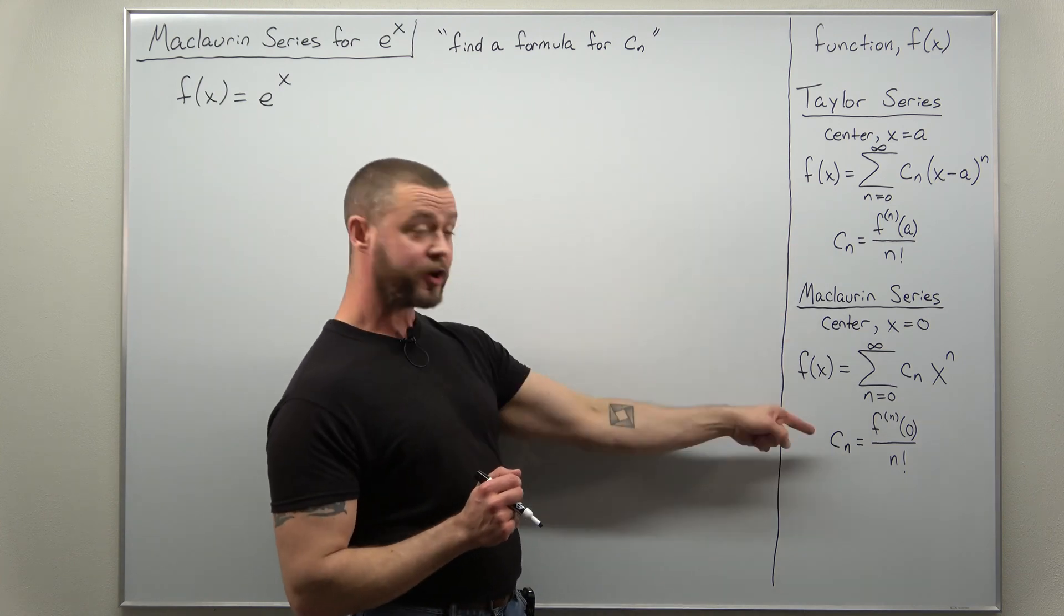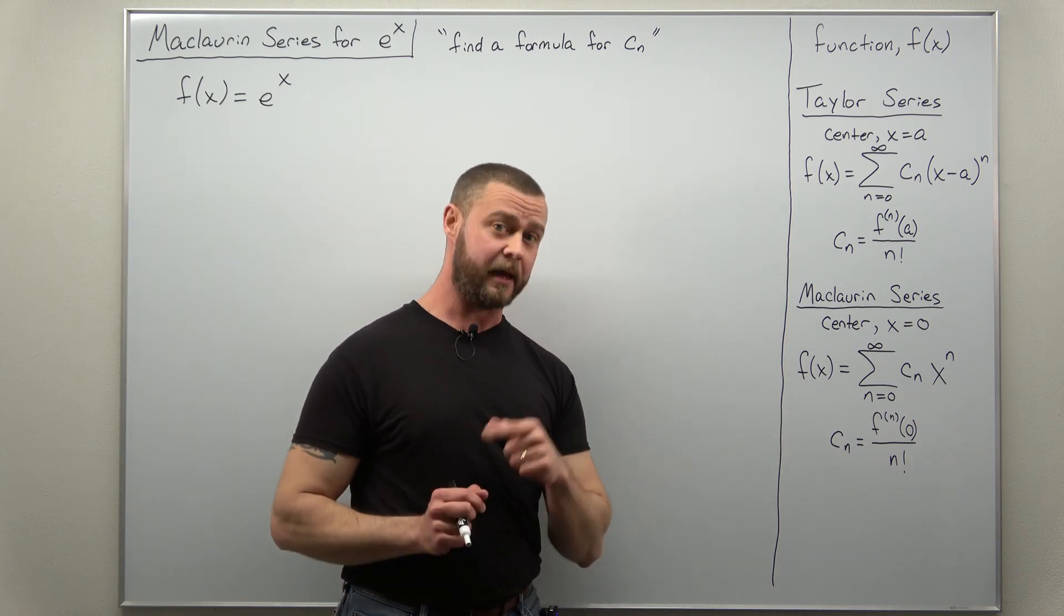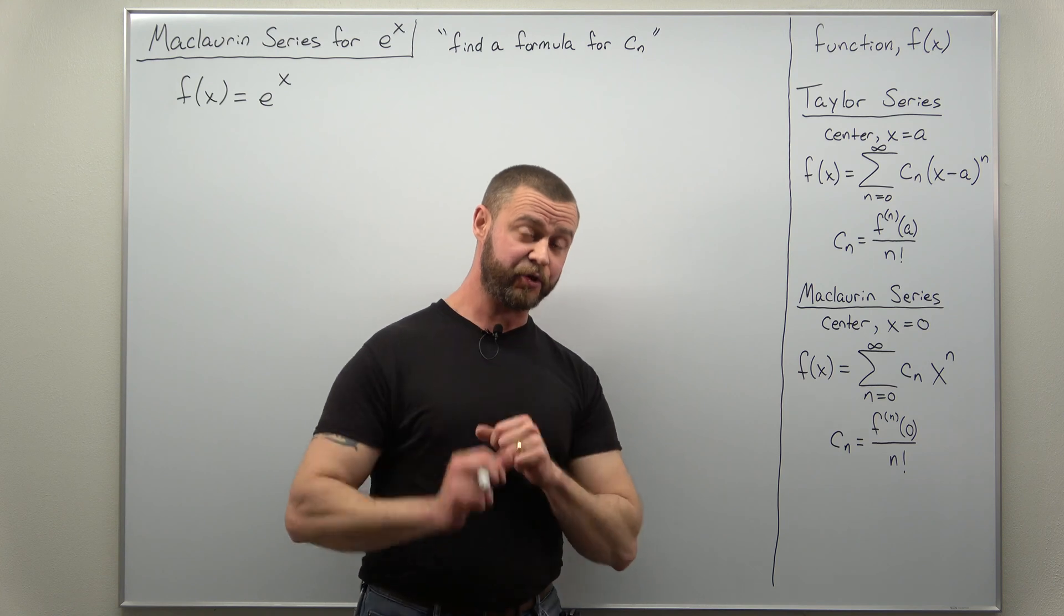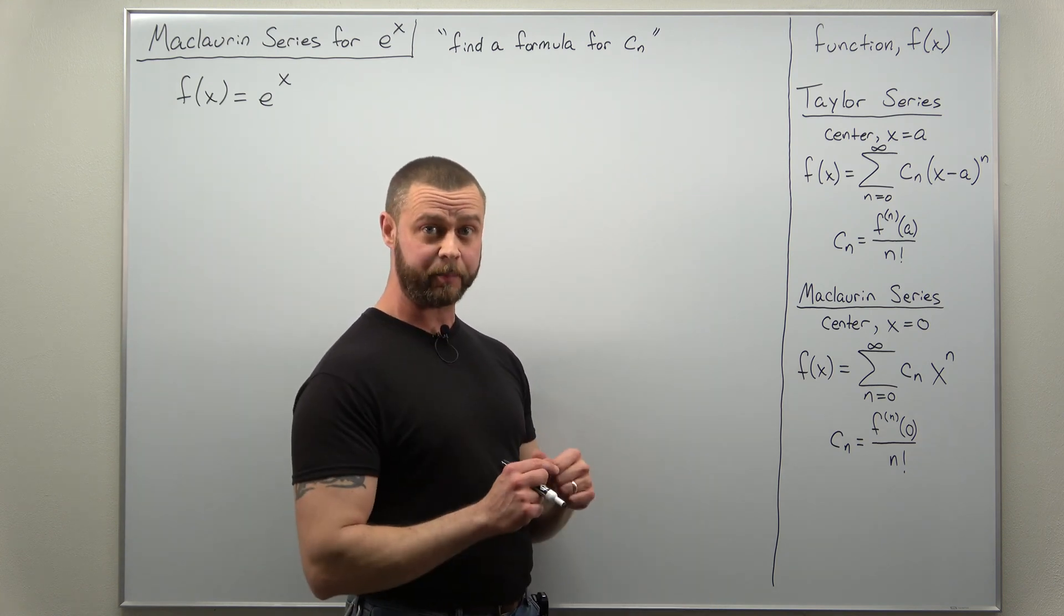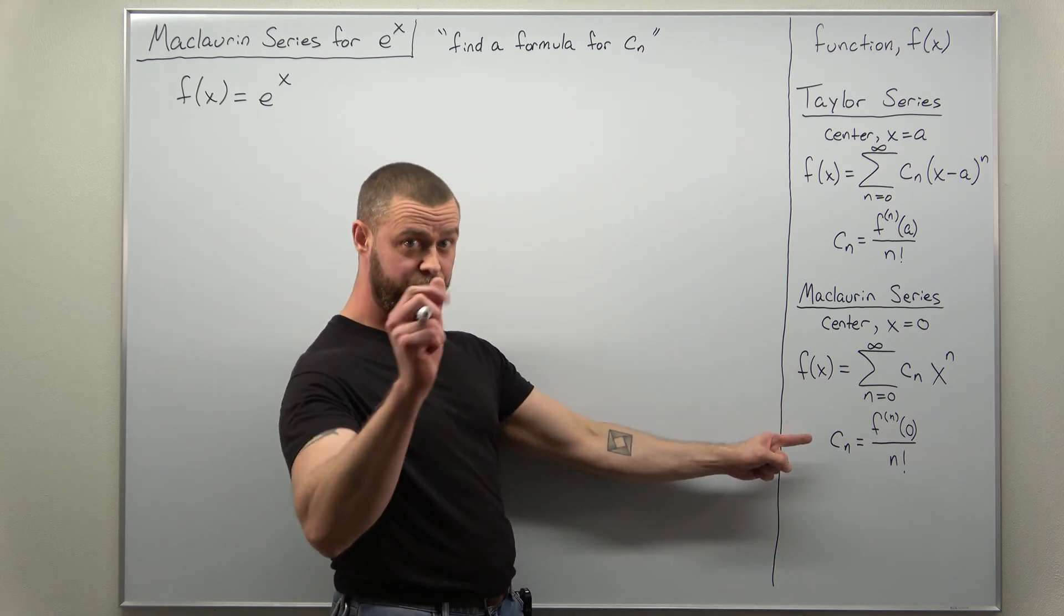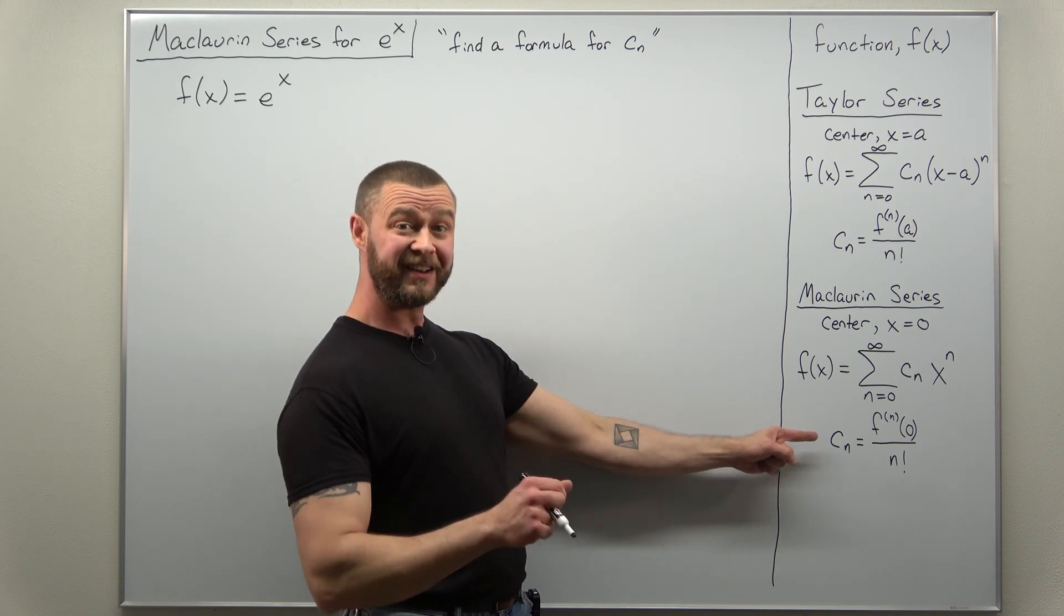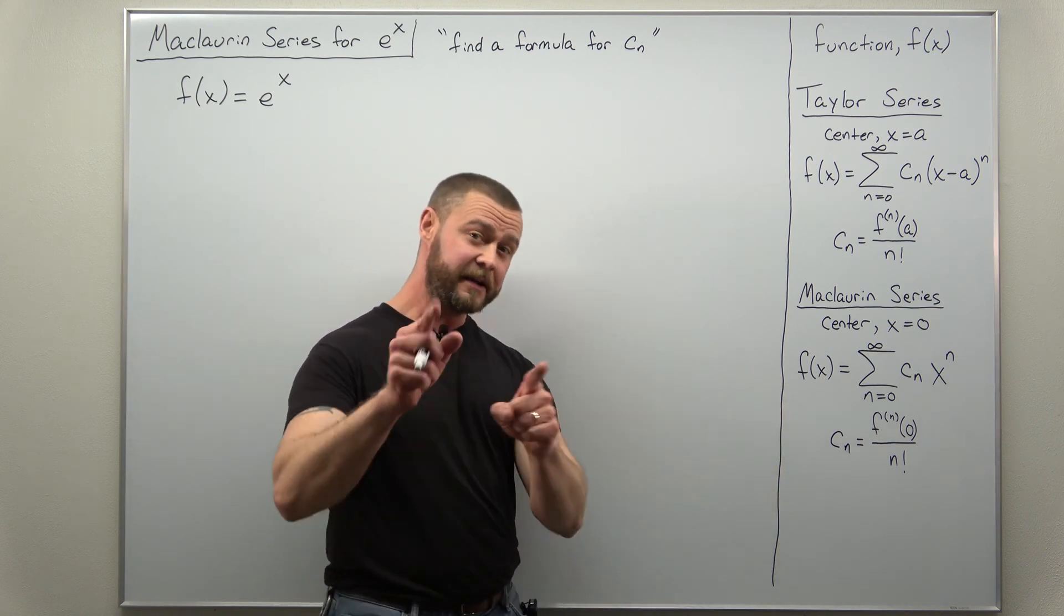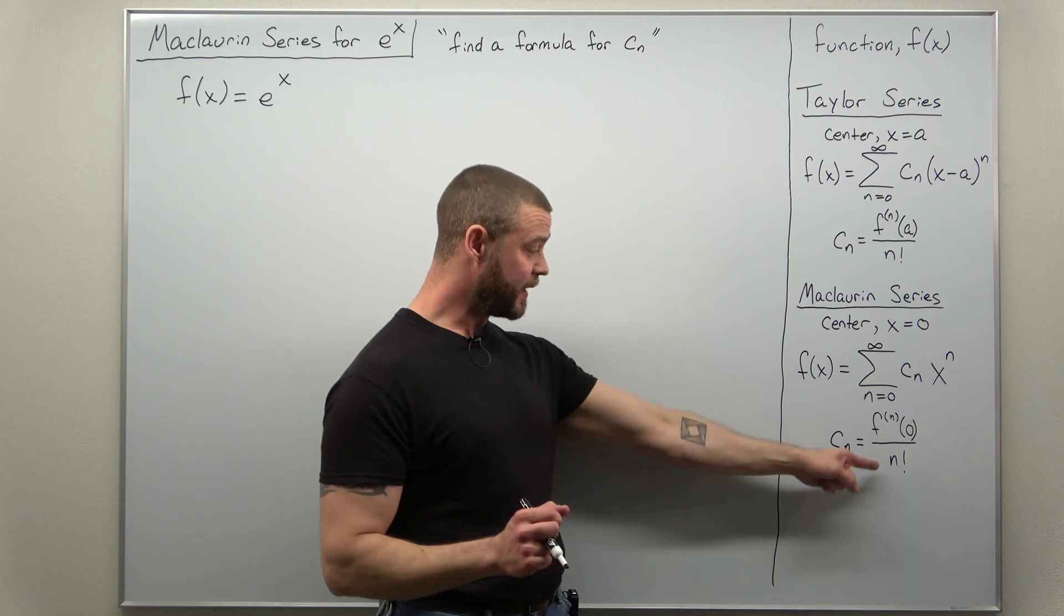Now for both of them the coefficients we calculate by calculating nth derivatives and then evaluating them at our center point. So for a Maclaurin series we're going to have to calculate an nth derivative, find the pattern for that, and then divide by n factorial.